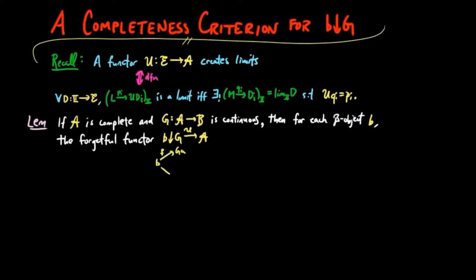which we recall takes a B over A object AF to A and a B over A morphism H to H, creates limits.